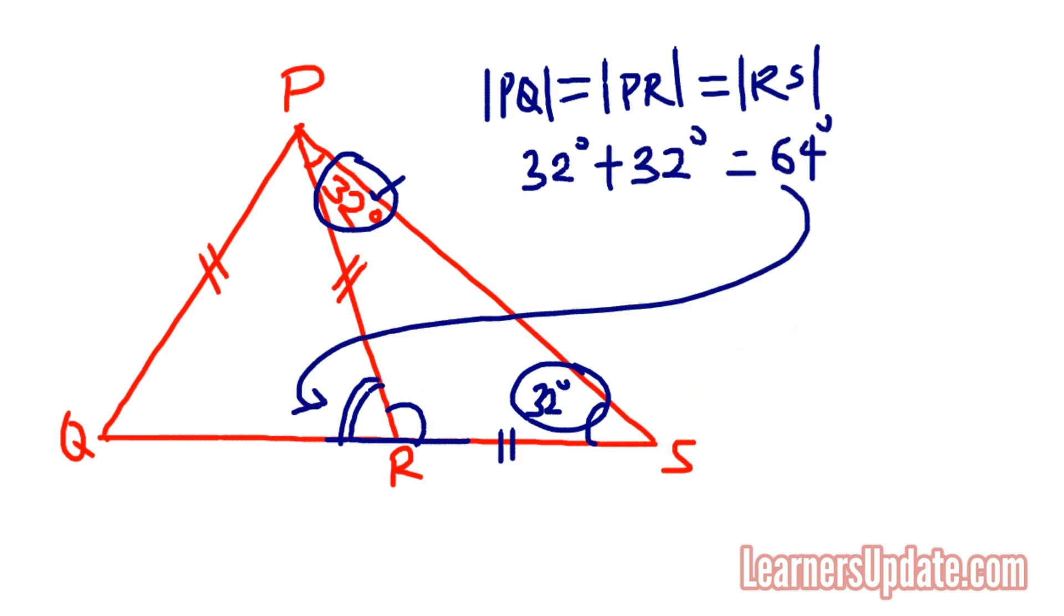Now that we know that the angle here is 64, and we are also given that this side is equal to this side, then if here is 64 this angle must also be 64. Yes, base angles of an isosceles triangle.